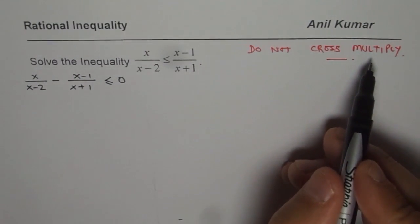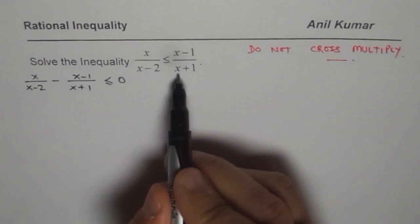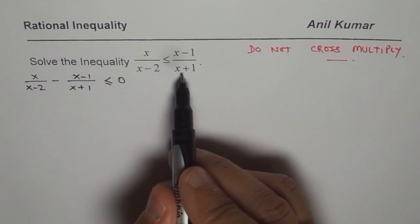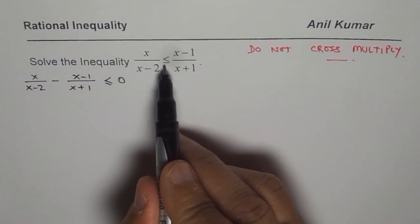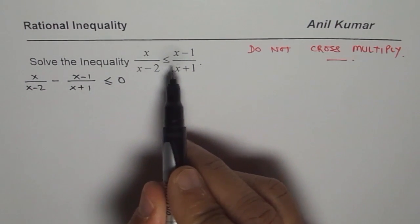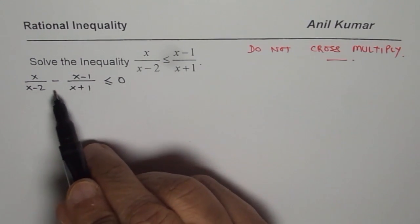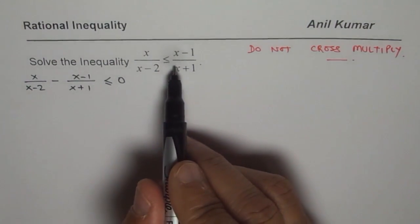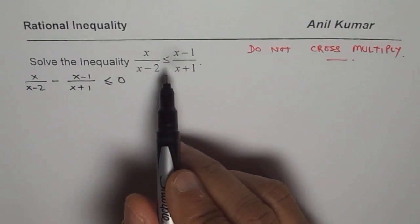Why should we not cross multiply? Since the term x could be any value, we could have this whole thing to be negative also. If you multiply by a negative number, you have to change the inequality sign. That is why. So you have to only bring it to one side, adding and subtraction should be done at this stage. That is the key when you are solving rational inequality.